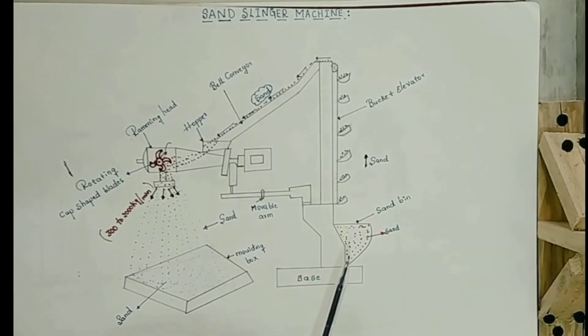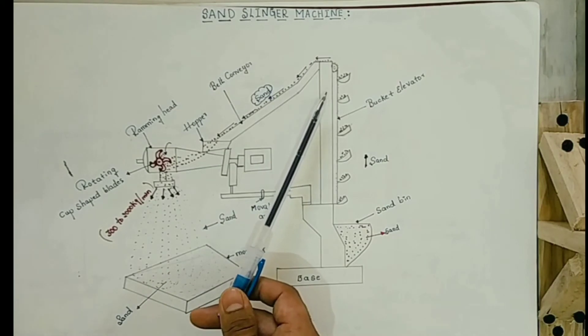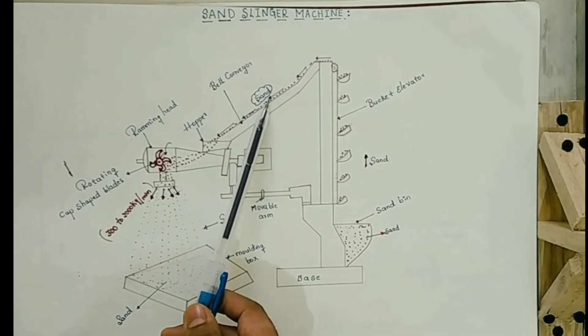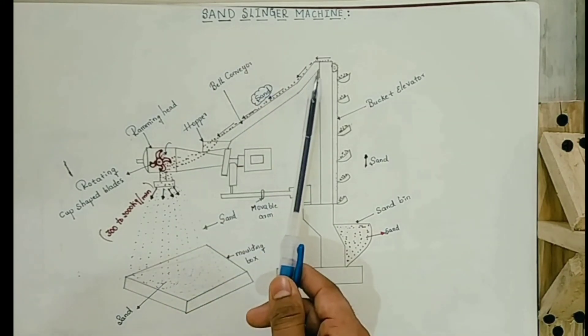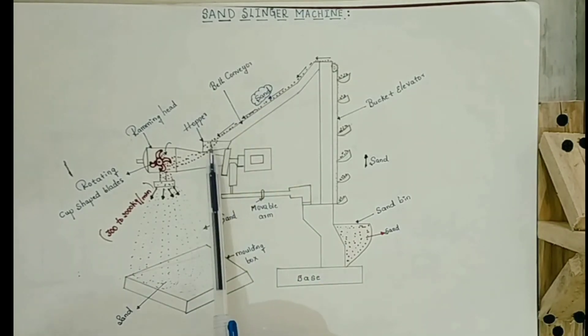Initially bucket elevator will lift the sand from the sand bin and that elevator throws the sand on the belt conveyor. Then belt conveyor carries the sand from the bucket elevator to the hopper. Then hopper will direct the sand from the belt conveyor to the ramming head.